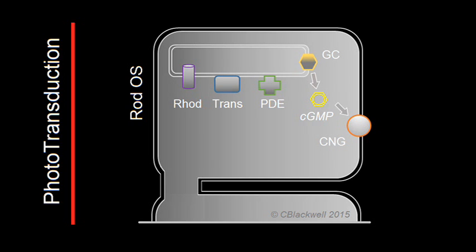The cyclic GMP acts on the cyclic nucleotide channel, labeled CNG, keeping it open. Open means it allows sodium and calcium ions to passively travel from outside the cell to inside. As positive ions move inside the cell, that is part of setting the resting electrical potential. This all happens in the dark.